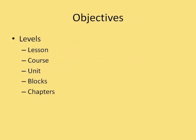Objectives can be written at the lesson level, the course level, or various other levels such as units, blocks, or chapters. These different levels of objectives are equally precise and concrete descriptions of learning outcomes. This presentation describes how to write the simplest form, the ABCD model.